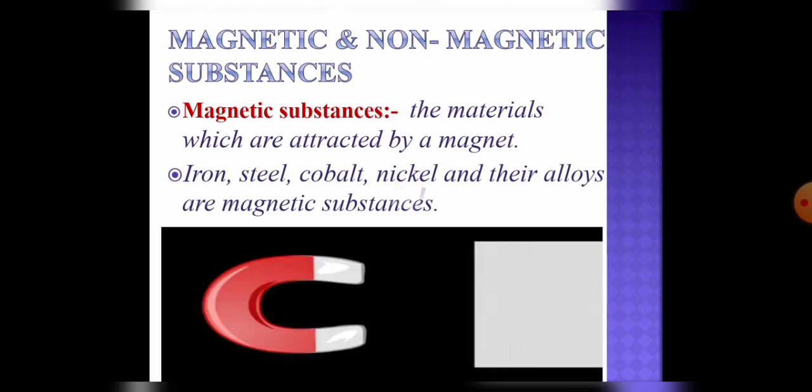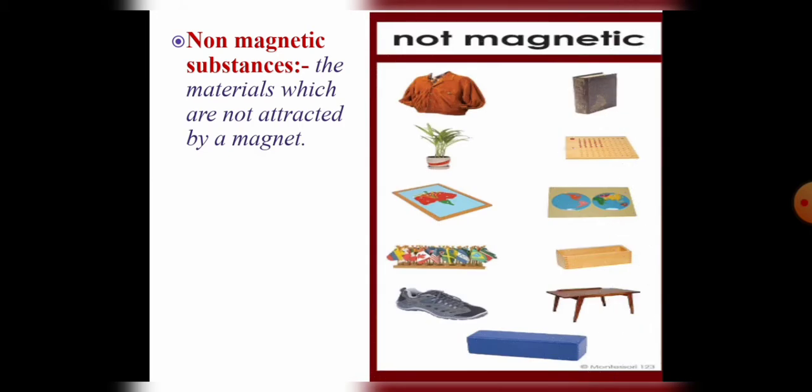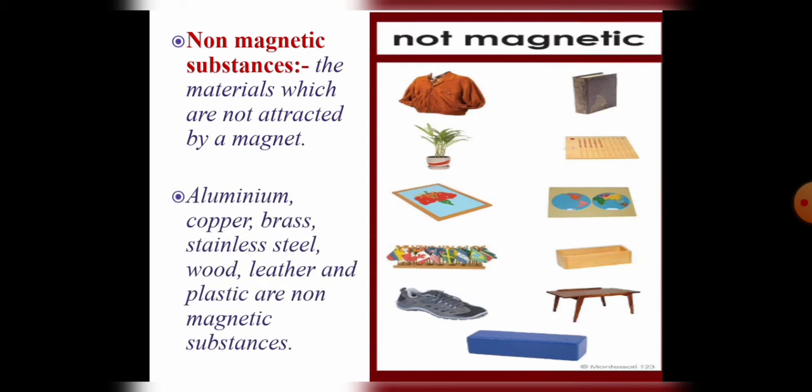Second, non-magnetic substances. So the materials which are not attracted by a magnet. And here you can see examples like aluminum, copper, brass, stainless steel, wood, leather and plastic are non-magnetic materials.